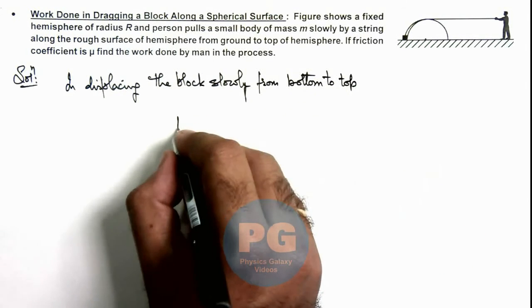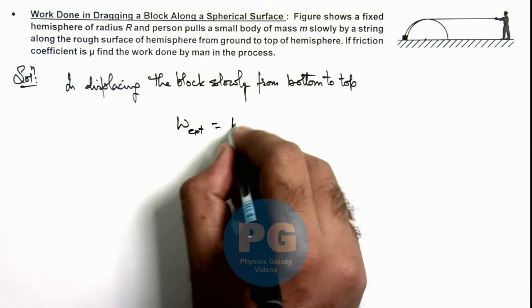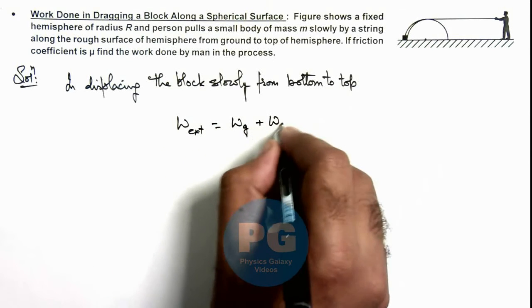Work done by external agent can be directly written as work done against gravity plus work done against friction.